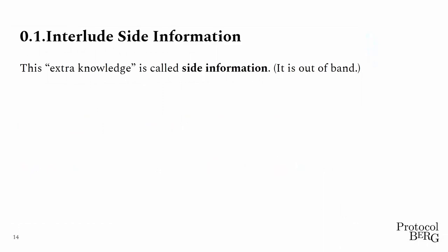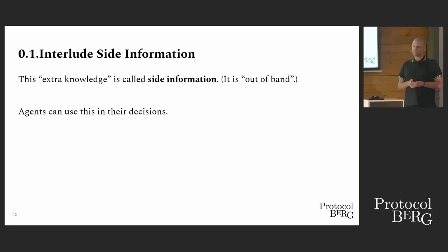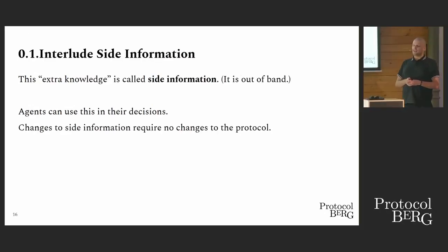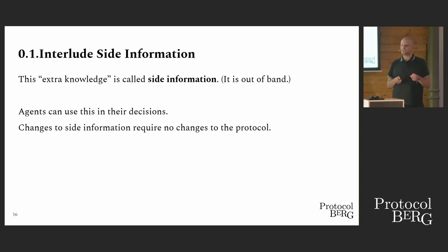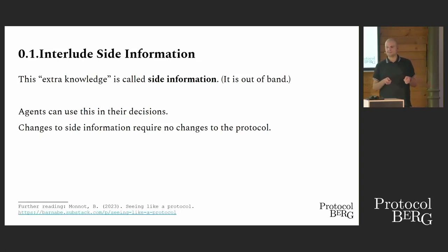This extra knowledge we call side information, and we call it side information because it's out of band of the protocol. Agents can use this in any decisions they make for interactions. Changes to side information, or information derived from side information, or mechanisms on side information don't require any changes to the base protocol.